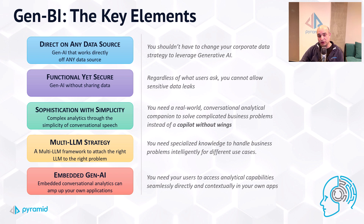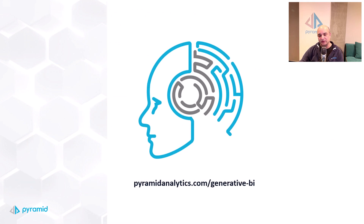That's quite a tall order when you consider the complexity of Gen BI. You can embed Pyramid content today in a hosted app with literally four lines of basic code. The injected app, which operates without iframes, incorporates the entire Gen BI framework complete with all the AI-driven capabilities and sophistication you would expect from inside a standalone Pyramid session — running completely inside your own application. So there you have it: the five key elements — AI that works directly on any data source, AI without sharing your data, complex analytics handled with simplicity, a multi-LLM strategy, and AI that can be seamlessly embedded into your own applications.